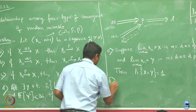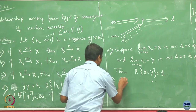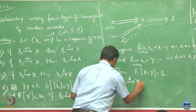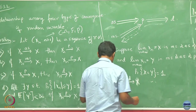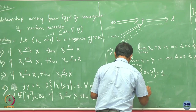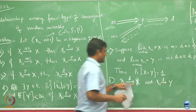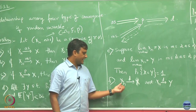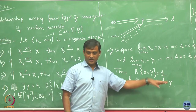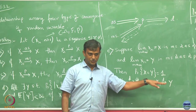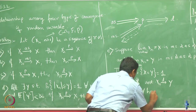The last point: suppose xn converges to x in distribution and xn converges to y in distribution. Then it must be the case that x and y have the same distribution.